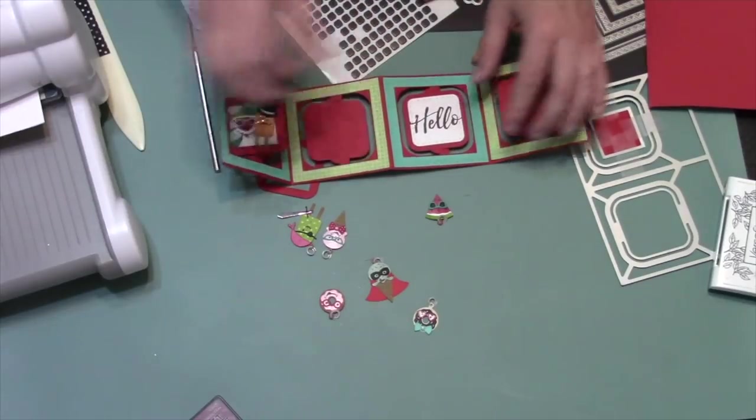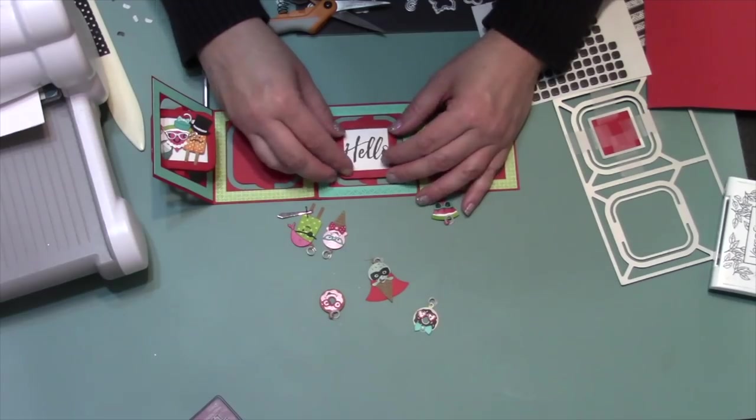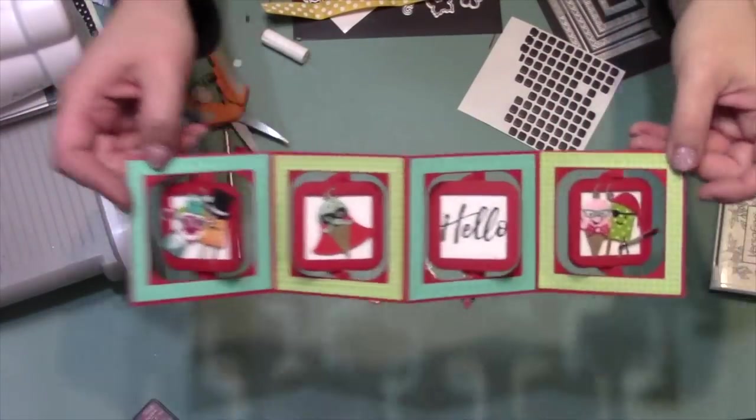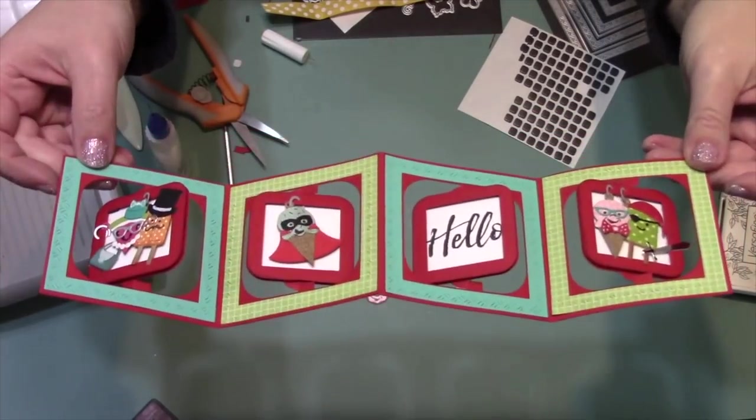Then I'm just going to cut that out with that same stitched square that comes in the Charm Accordion set, and then just one of those red frames on pop dots. Then I just repeated that same process to add my other large charms on pages 2 and 4.